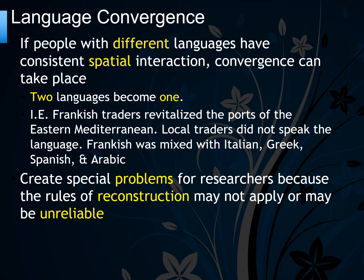Frankish was mixed with Italian, Greek, Spanish, and Arabic. This creates special problems for researchers because the rules of reconstruction may not apply or be reliable when trying to figure out what language is what.